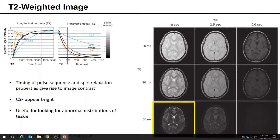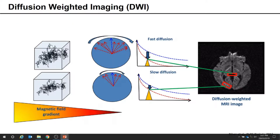Diagnostic imaging can also provide information about the microstructure and potentially the function of tissues by measuring the movement of water. In diffusion-weighted imaging, the image contrast comes from the variation in the rate of water diffusion between tissues. The pulse sequence is similar to the T2-weighted image, except that additional magnetic field gradient pulses are applied to induce additional signal loss due to the rate of diffusion in those tissues.